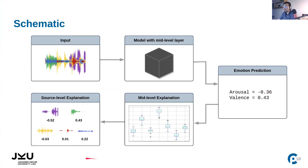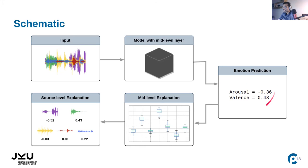This is an overall schematic of our method: the input goes into our model with the mid-level layer, which gives us the emotion predictions. For the first level of explanations we have mid-level based explanations, and on the second level we have source-level based explanations. Thank you for listening to our presentation.